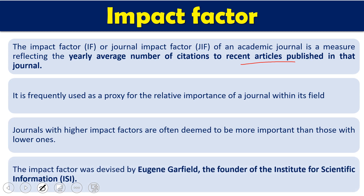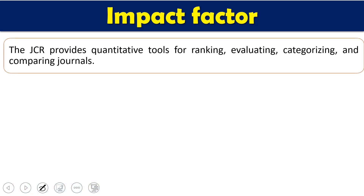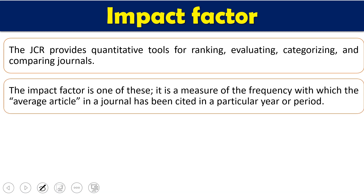Impact factor was devised by Eugene Garfield, the founder of the Institute of Scientific Information (ISI). The Journal Citation Reports (JCR) provides a quantitative tool for ranking, evaluation, categorization, and comparison of journals, so you can compare journals on this basis. Impact factor is used as an important basis for the selection of a journal and is also a measure of the journal's reputation. Impact factor measures the frequency with which the average article of a journal is cited in a particular year. It is a dynamic index that changes on the basis of citations and number of papers every year.